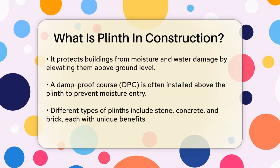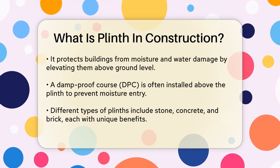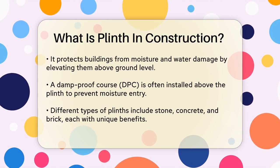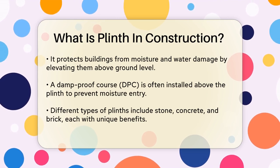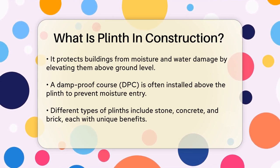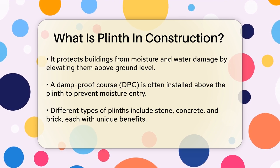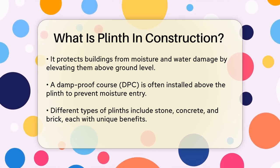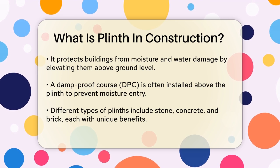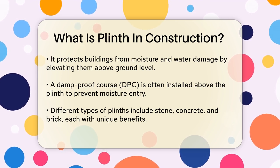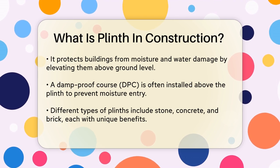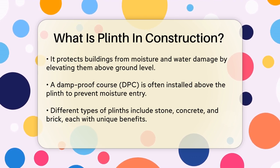Plinths also protect buildings from moisture and water damage. By elevating the structure above ground level, they reduce the risk of water seeping into the building. This is especially important in areas prone to flooding or heavy rainfall. A damp proof course (DPC) is often installed above the plinth level to further prevent moisture from entering the building.